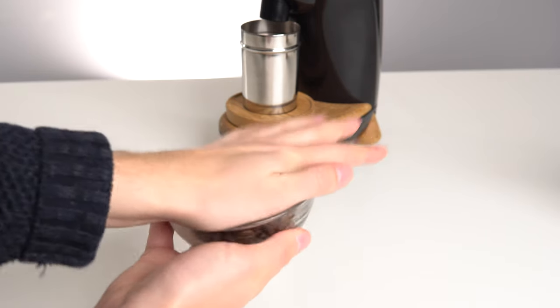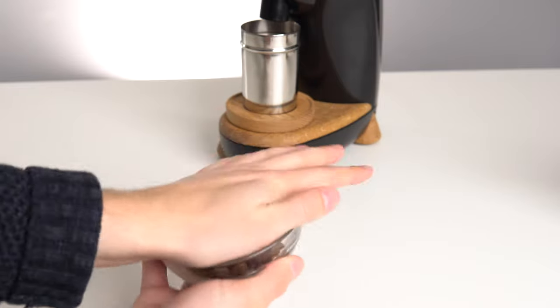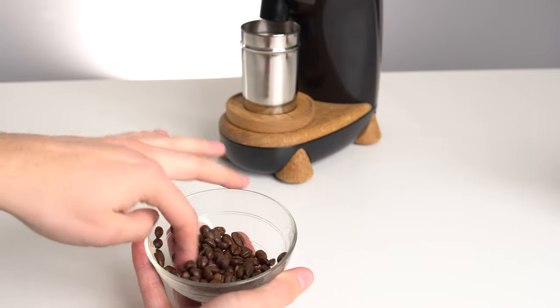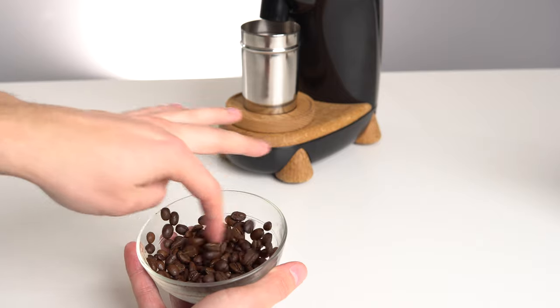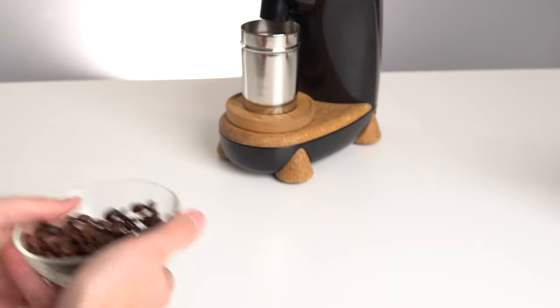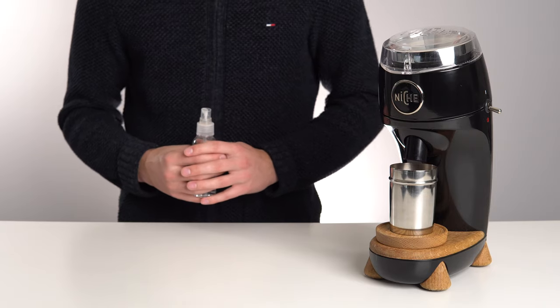If you don't use a dosing cup, you can also do this into your grinding hopper and mix around with your finger. Just make sure you're not repeatedly soaking the same beans over and over. You should be single dosing anyways.